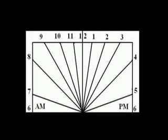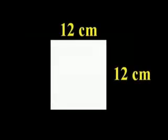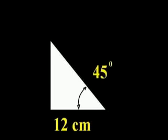Label the dial as shown. The gnomon has a base of 12 cm and is cut at an angle of 45 degrees. A simple way to make this gnomon is to cut a 12 cm square along its diagonal.